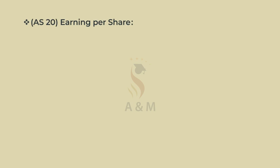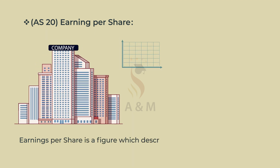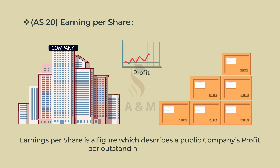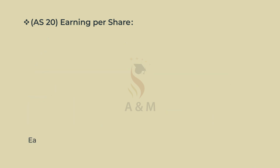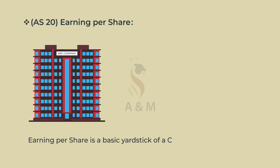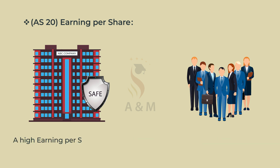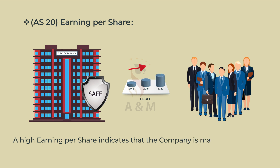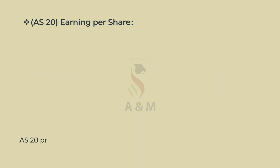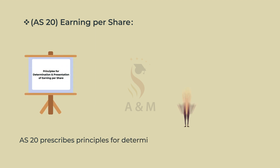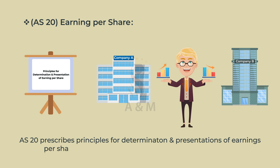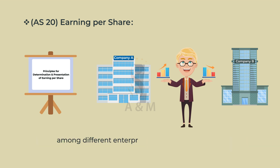Accounting Standard 20: Earnings Per Share. Earnings per share is a figure which describes a public company's profit per outstanding share of stock. It is a basic yardstick of a company's profitability and is used to tell investors whether the company is safe or not. A high earnings per share indicates that the company is making more profit. Accounting Standard 20 prescribes principles for determination and presentation of earnings per share, which will improve comparison of performance among different enterprises for the same period.